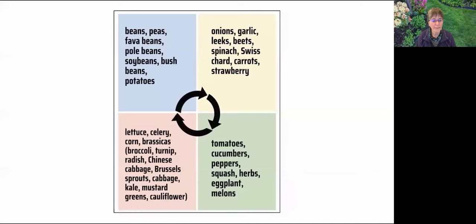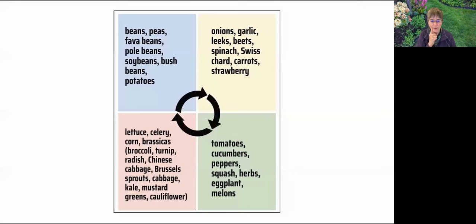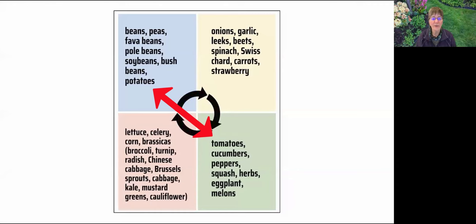Back to our crop rotation chart. We said we don't want to follow tomatoes with potatoes. That's why they're separated with a cycle between them — here are tomatoes, and over here are potatoes. As you rotate your crops, there's going to be a cycle in between so members of the nightshade family aren't just following each other right away.